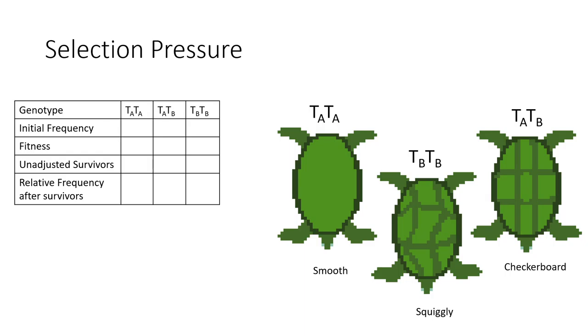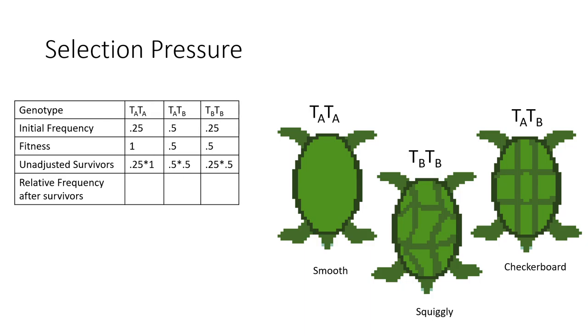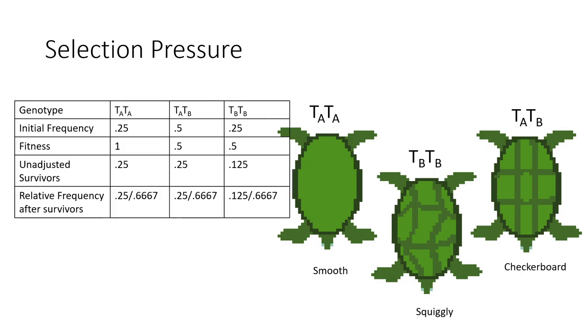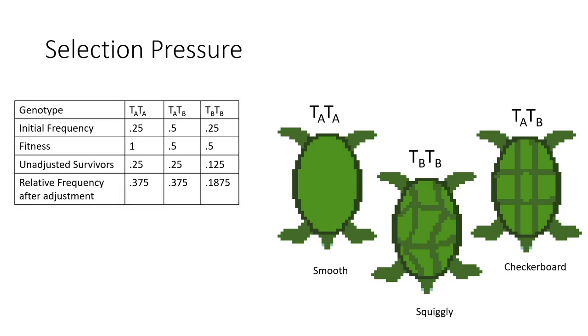So here is the initial frequency and the fitness, and we can multiply them together to find the unadjusted survivor numbers. And then we can use the average fitness of the population and use it to divide the unadjusted survivors to find the relative frequency after adjustment.